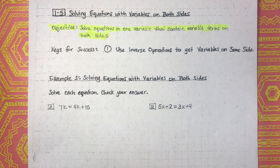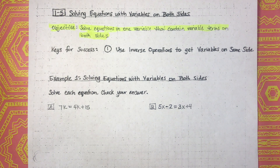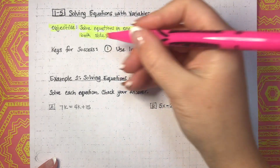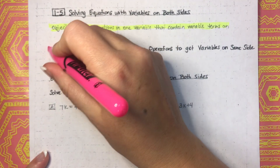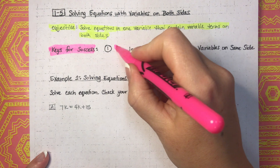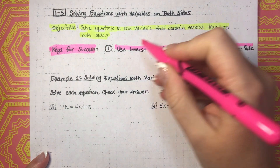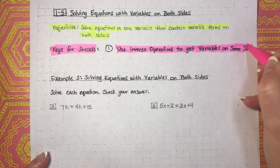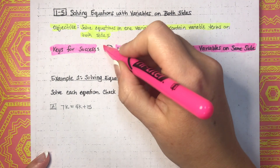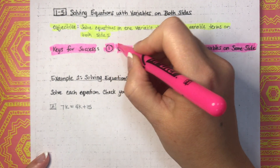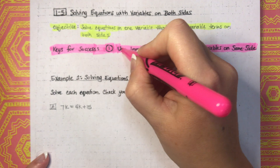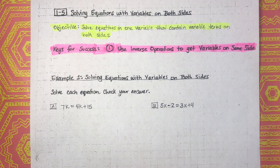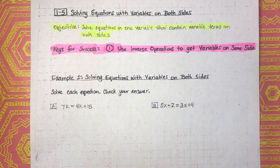Before we had variables on one side of the equation; now we're going to have variables on both sides of the equation. The key for success is to use inverse operations to get the variables on the same side. We're going to want to get those variables on the same side — that's going to be one of the first things we do. Let's get started with Example 1: Solving Equations with Variables on Both Sides.